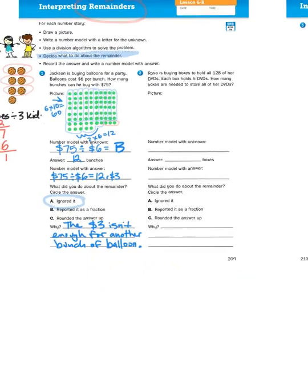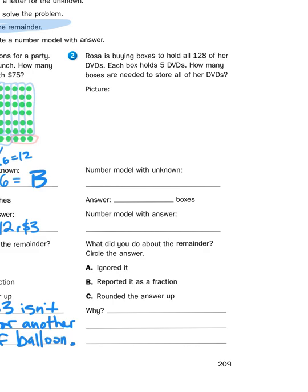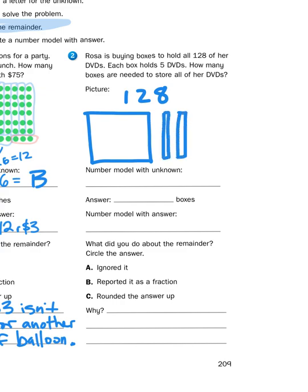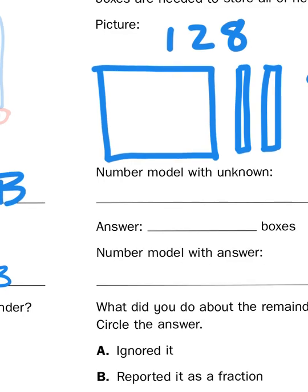Let's take a look at the second problem. Rosa is buying boxes to hold all 128 of her DVDs. Each box holds 5 DVDs. How many boxes are needed to store all of her DVDs? Now, 128 DVDs makes for a very large array. I don't want to draw 128 dots and group them that way. So there's another approach I can take. So I'm going to think about base 10 blocks and the way that we model them. So when I have 128 of something, I could represent that as a raft of 100, 2 rods of 10, and then 8 ones. So this is 128.